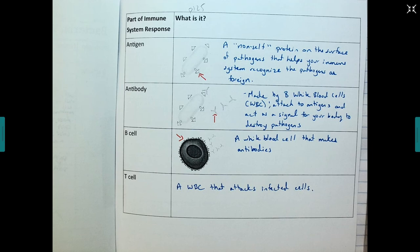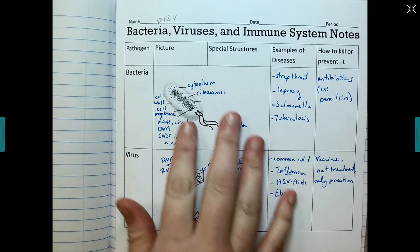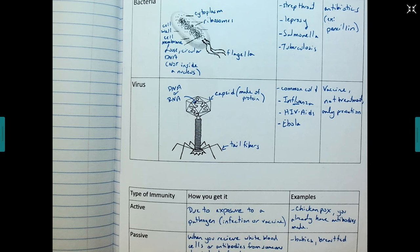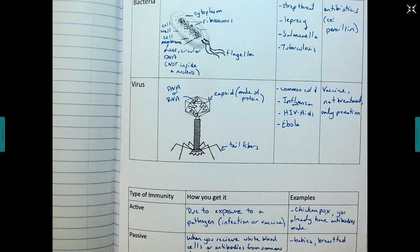So that is it for our notes on pathogens. We've got virus and bacteria. We talked about the types of immunity, the two different types of immunity. If you have any questions or concerns about the notes from these packet pages, please let me know. Thanks.